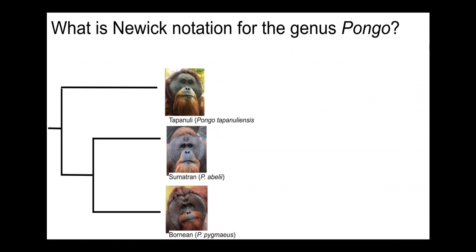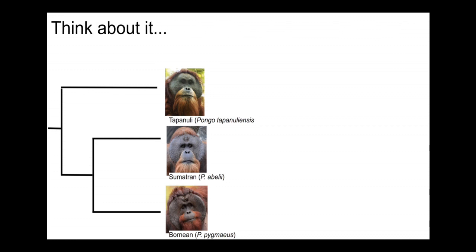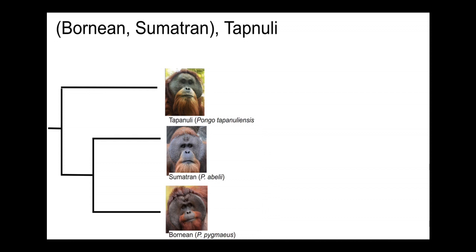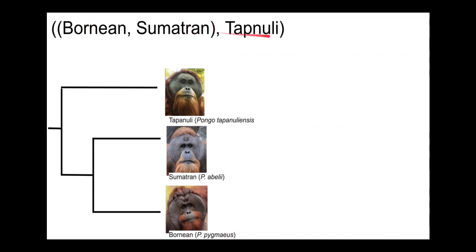Here's a little challenge — stop the video and think about what the Newick notation is for the genus Pongo. The Bornean and Sumatran orangutans are part of a clade, so you write them next to each other and surround them by parentheses. The Tapanuli orangutan, a relatively recently recognized species, goes on the outside with a comma, and the whole thing is enclosed in outer parentheses. So Bornean and Sumatran are sister species enclosed in parentheses, with Tapanuli added as the more distant relative.